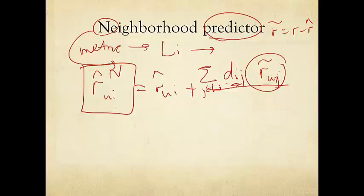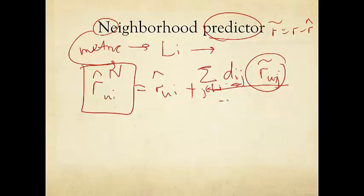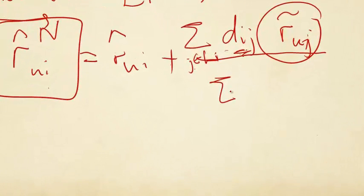And then we have to normalize somehow, because we might be adding a lot of these movies in the neighborhood. So we have to divide that by the magnitude of the weights.